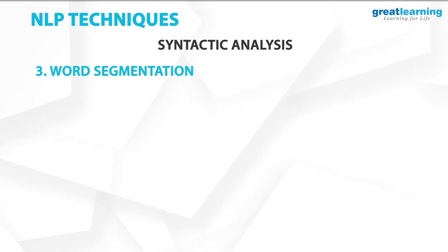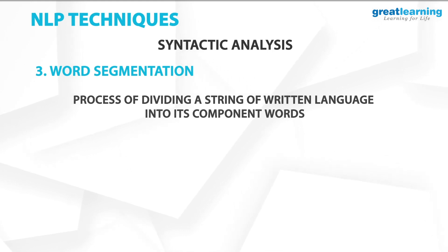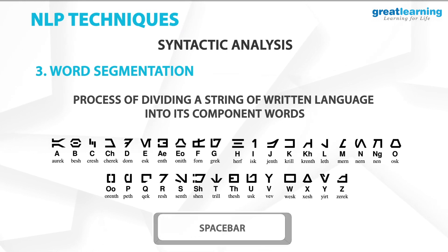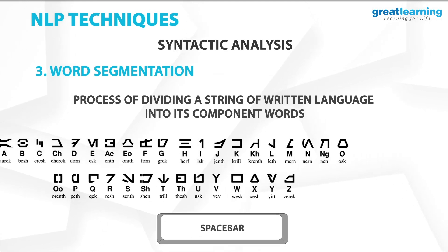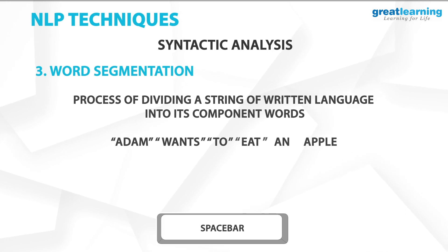The third technique is known as word segmentation. Word segmentation is the process of dividing a string of written language into its component words. In English and many other languages using a Latin alphabet, a space is a good approximation of a word divider. For example, the sentence Adam wants to eat an apple would be segmented into individual words: Adam, wants, to, eat, an, apple.